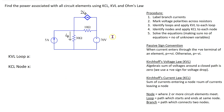Consider this circuit. It has one independent current source, one independent voltage source, and a dependent source. There is an arrow inside the symbol, which means this is a dependent current source whose magnitude is in terms of another circuit current. So this dependent source is a current controlled current source.